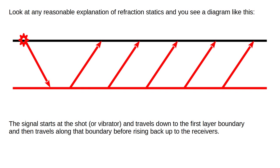Looking at any reasonable explanation of refraction statics, you see a diagram showing the signal starting at the shot or vibrator, traveling down to the first layer boundary, then traveling along that boundary before rising back up to the receivers.